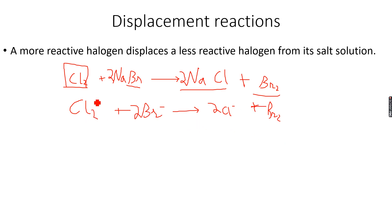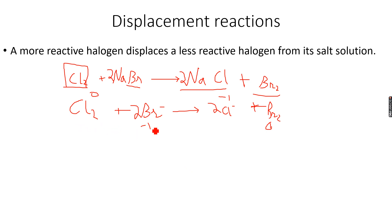This shows that chlorine is getting reduced and bromine is getting oxidized. The oxidation number of chlorine decreases from 0 to −1, while the oxidation number of bromine increases from −1 to 0. That's why this is a redox reaction. Chlorine is acting as an oxidizing agent because it is oxidizing bromide, and bromide is acting as a reducing agent because it is reducing chlorine. This is because chlorine is a stronger oxidizing agent than bromine.